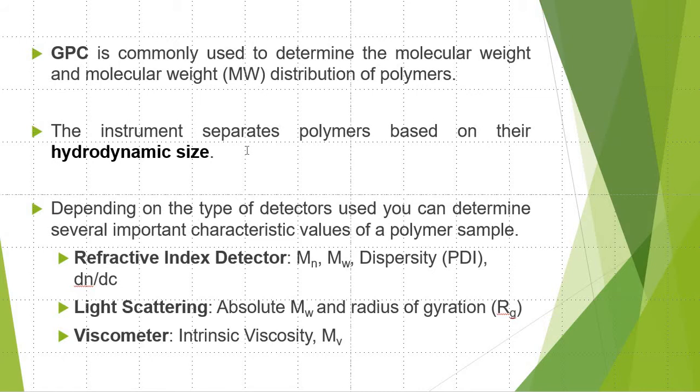Depending on the type of detectors used in a GPC system, you can determine several important characteristic values of a polymer sample. If using just a refractive index detector, you can determine the number average, weight average molecular weights, along with the dispersity or polydispersity, and also provide the refractive index increment, or dn/dc value.